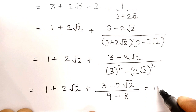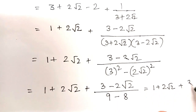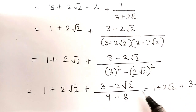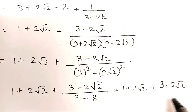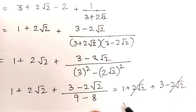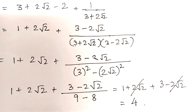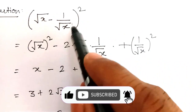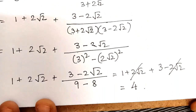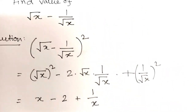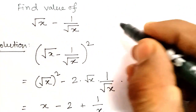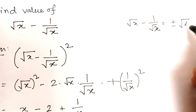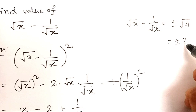So we can write this as 1 plus 2 root 2 plus 3 minus 2 root 2, because 9 minus 8 is 1, so dividing by 1 gives 3 minus 2 root 2 as is. Now the 2 root 2 and minus 2 root 2 cancel out, so this value is 4. We found that root over x minus 1 divided by root over x, whole squared, equals 4. Therefore root over x minus 1 divided by root over x equals plus or minus root 4, which is plus or minus 2. This is the answer.